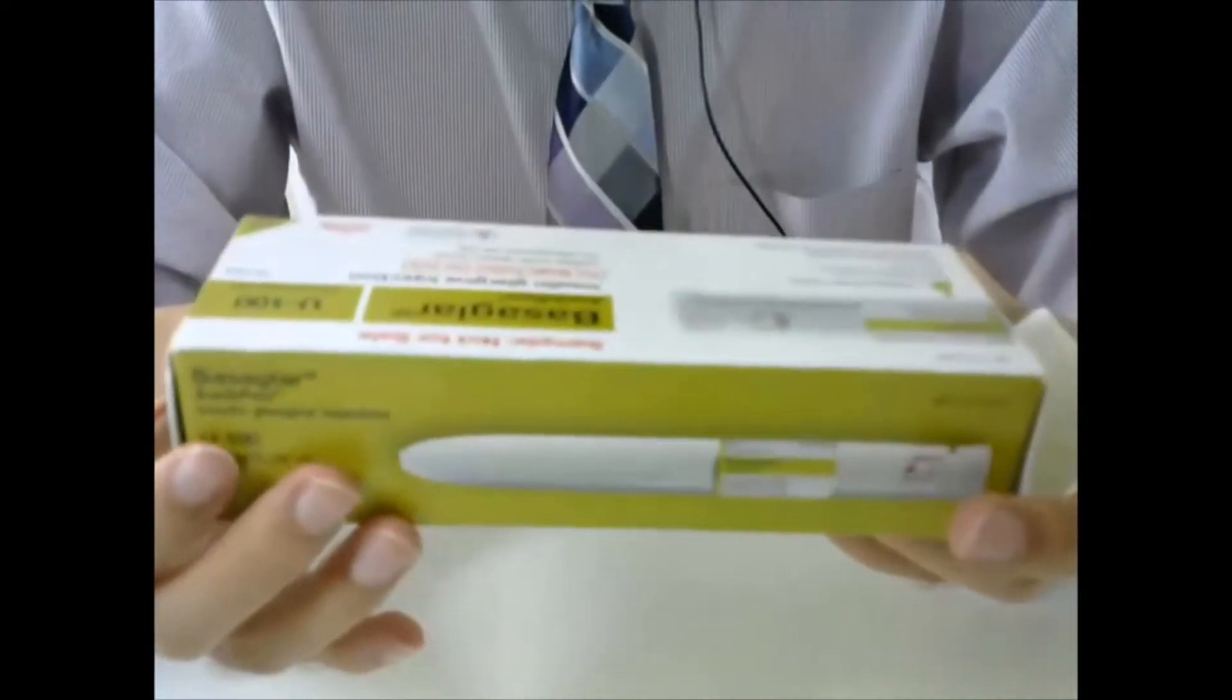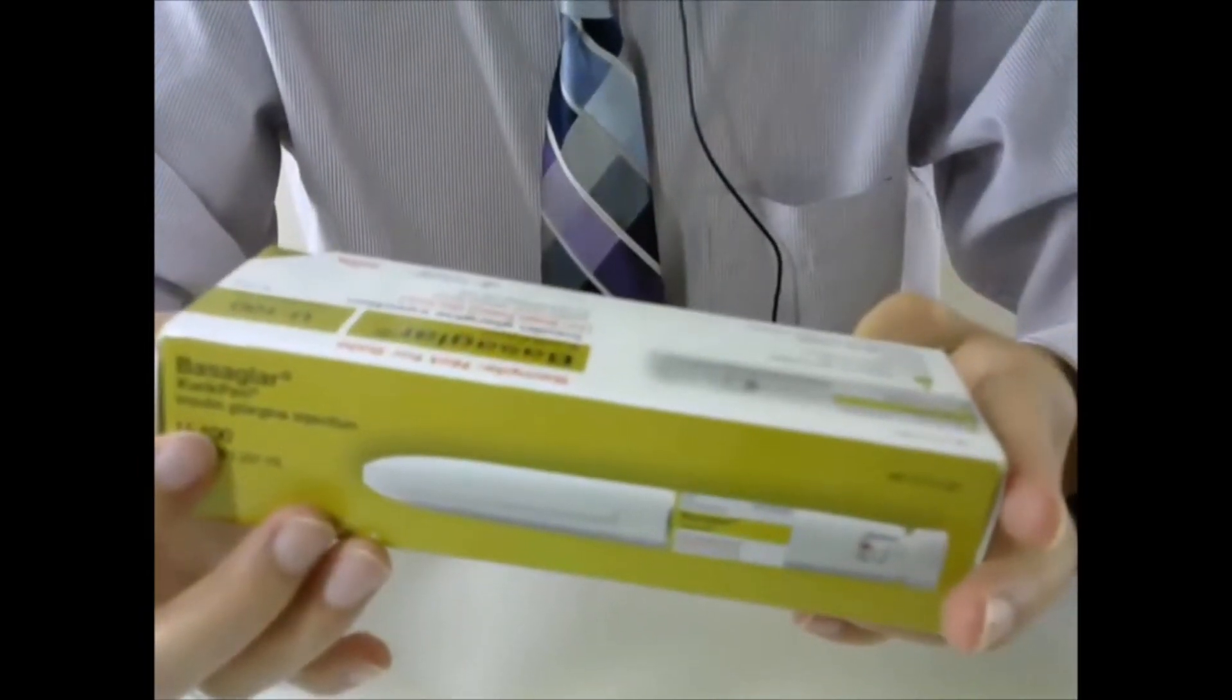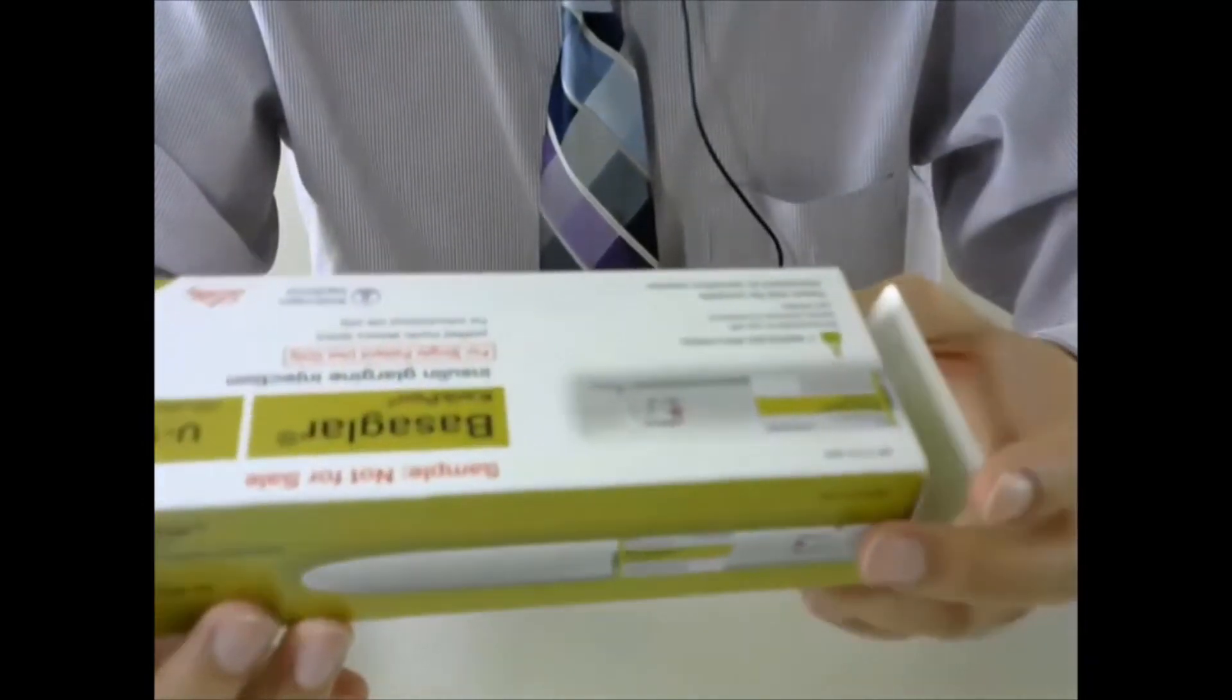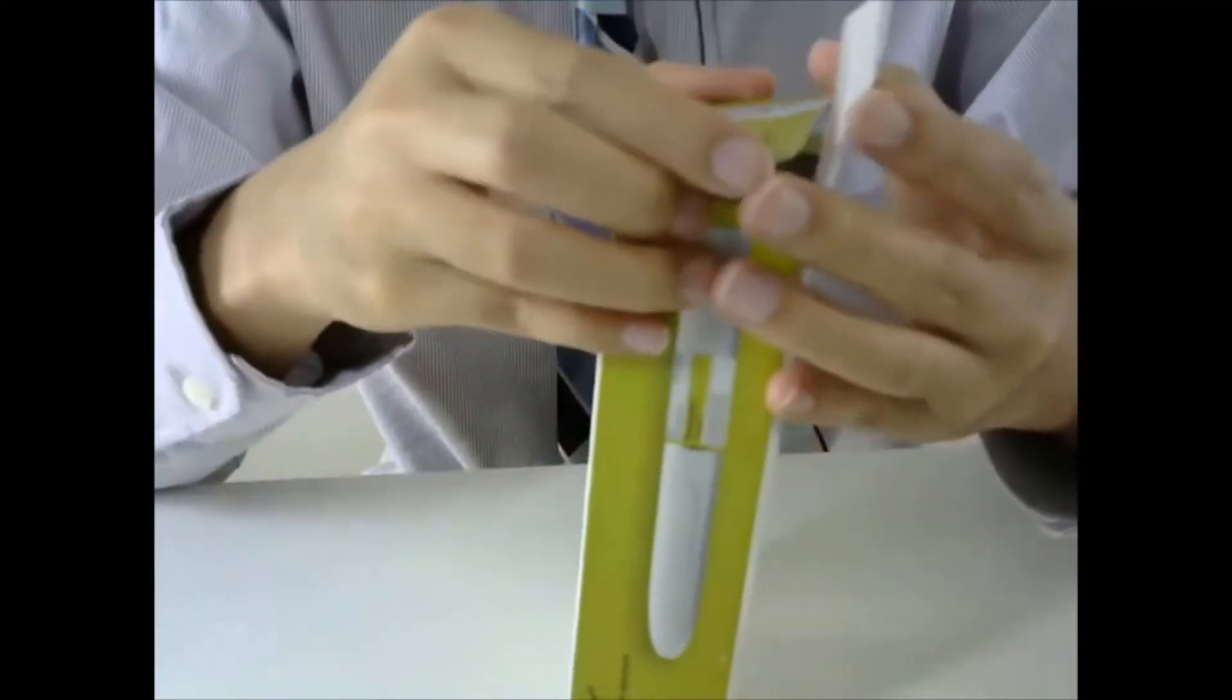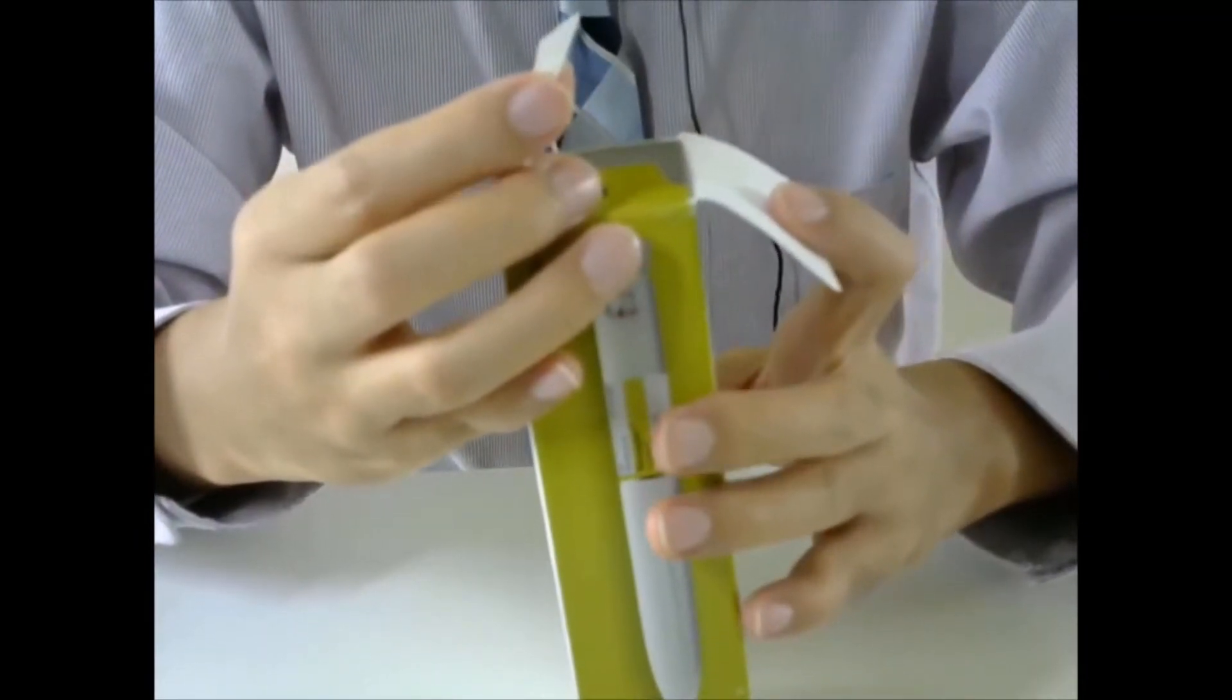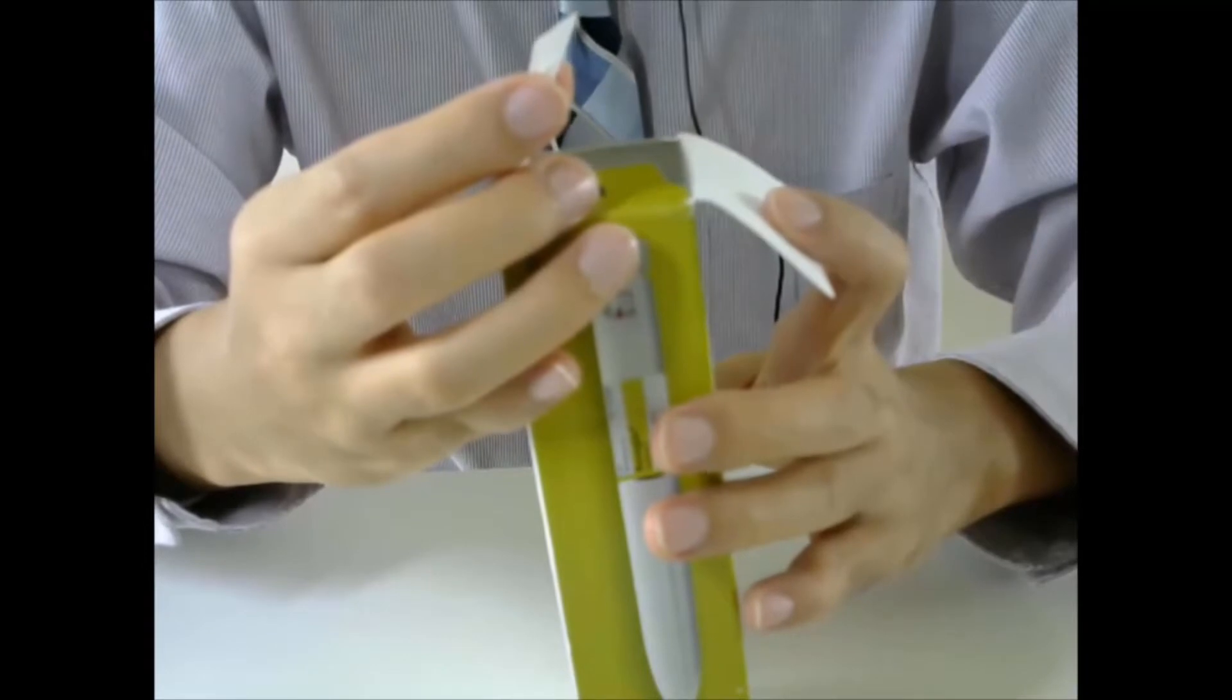You should always store the insulin in the fridge, but not in the freezer. Once you start to use a pen, you should keep it at room temperature and toss it in 28 days.